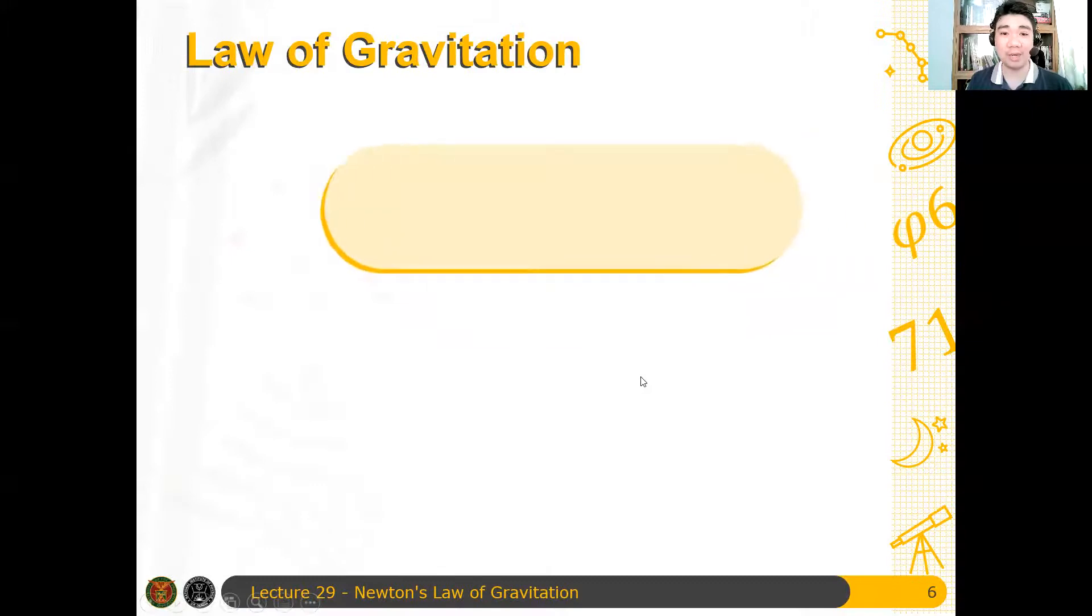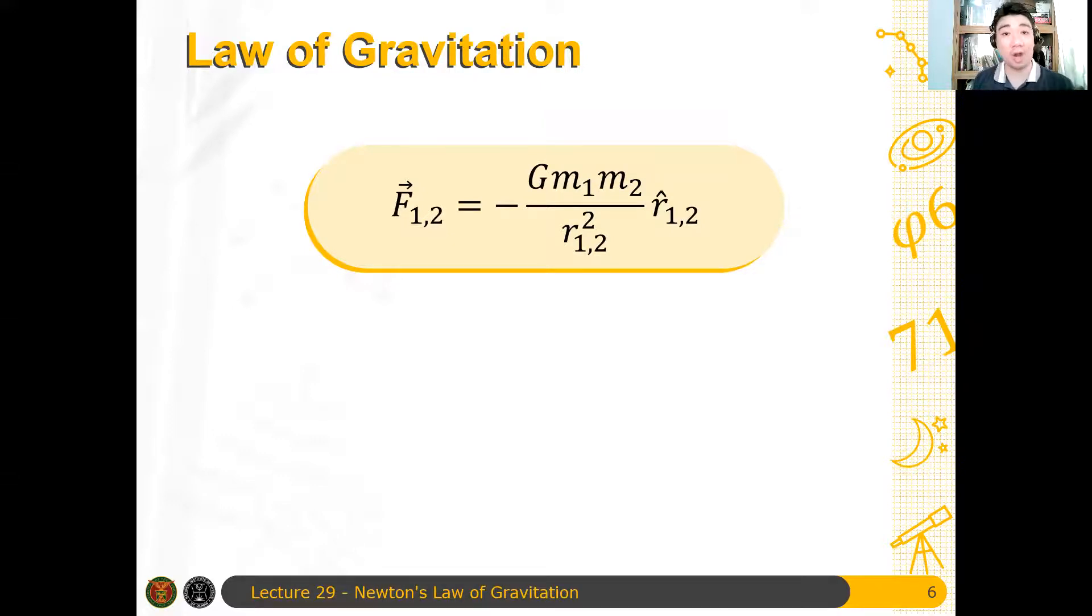So in equation form, it looks like this. If, for example, you have two bodies, one and two, then the gravitational force exerted by one on object two is equal to Gm1m2 over r12 squared times r12 hat. So what do these variables mean? Of course, let's say that the masses of two objects are m1 and m2 respectively, and then let's say that r12 is the distance between them. So in that case, it's proportional to the inverse square of the distance between them. And the r12 here is the unit vector from one going to two. So that's basically what the universal law of gravitation states.